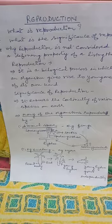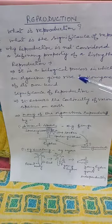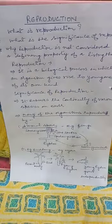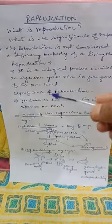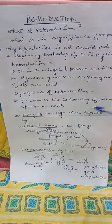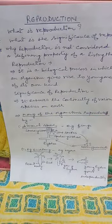Reproduction is a biological process in which an organism gives rise to young ones of its own kind. It ensures the continuity of various species on earth, meaning that in the absence of reproduction, the species will not be able to exist for a long time.